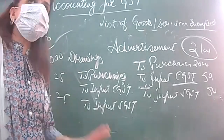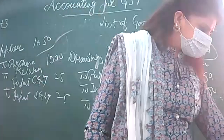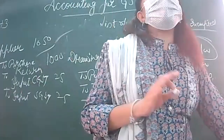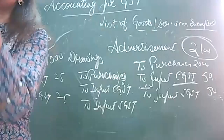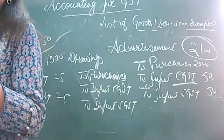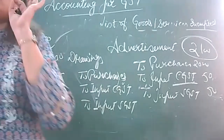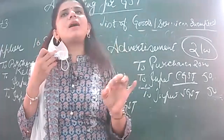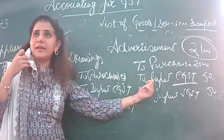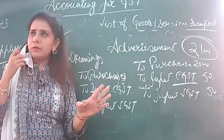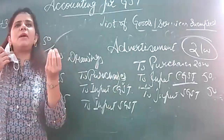Any doubt to anyone? There is an important note: if in a purchase return case the input is reversed, then definitely in a sales return case the output is reversed. In the case of sales return, output CGST is to be reversed, and it is reversed by debiting it — because input you reverse by crediting, and output you reverse by debiting. All the logic is clear: if goods are not being sold in the market, how can you set it off against your output?